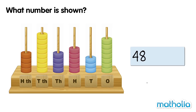In the 1,000s place, there are four beads. In the 100s place, there are five beads. In the 10s place, there are three beads. And in the 1s place, there are seven beads. The number shown on the place value abacus is 484,537.